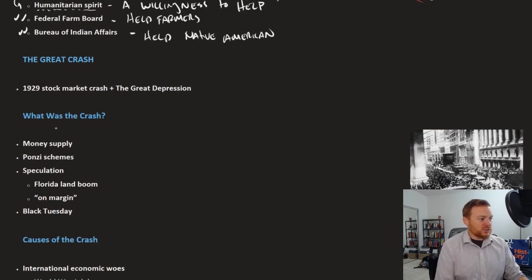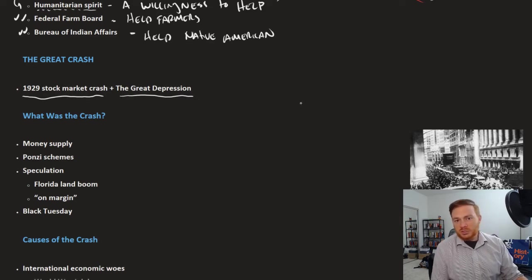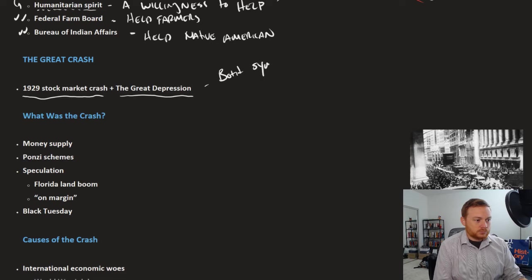One important distinction to make here is that the 1929 stock market crash and the Great Depression are not necessarily causes of one another. So 1929 stock market crash did not cause the Great Depression, but these are both symptoms of a troubled economy.